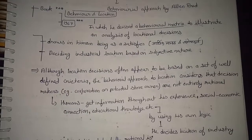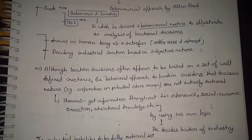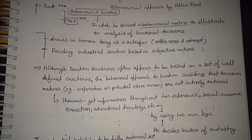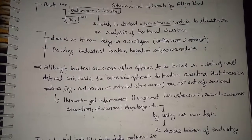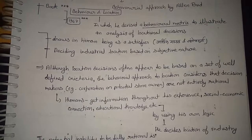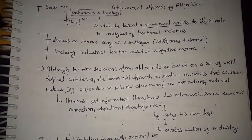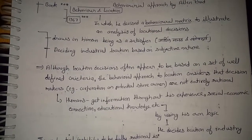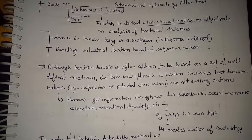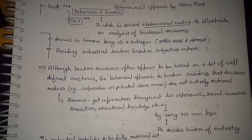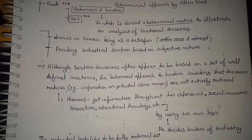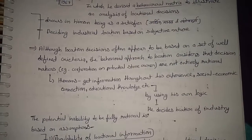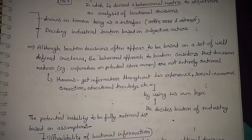For the behavioral matrix concept, he draws in human being as a satisfier deciding industrial location based on subjective nature. So human is the subject here — it is based on subjective nature. He says that human being is a satisfier, and not only human but the economic human — the 'Arthik Manav' and 'Santoshkartha' — that satisfier.